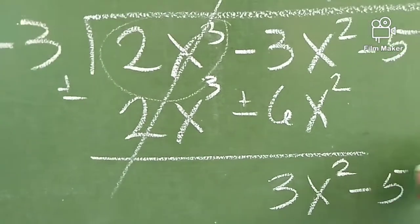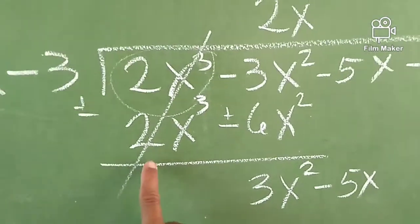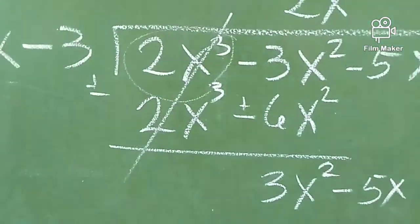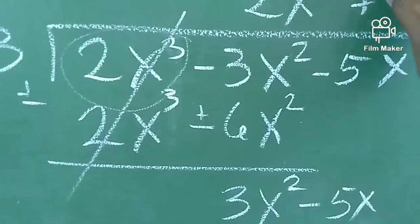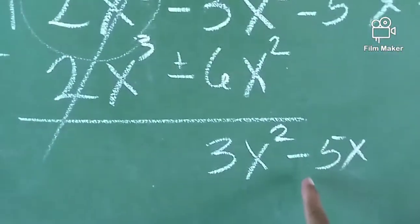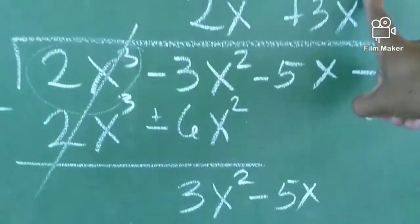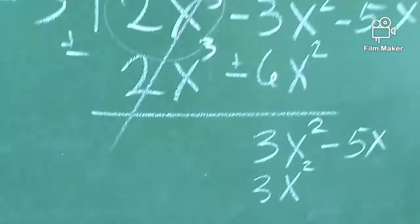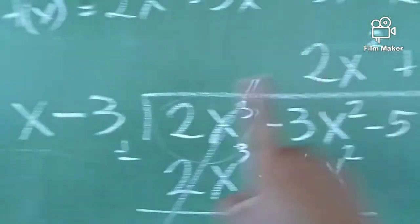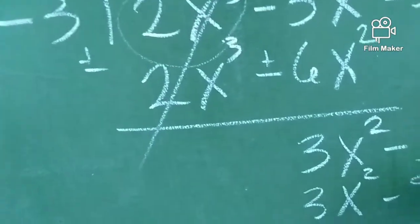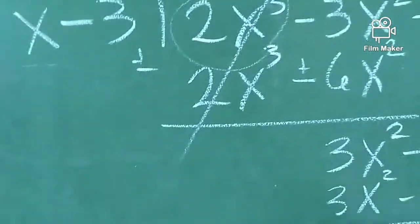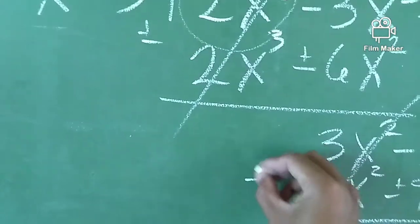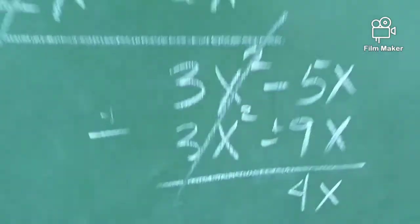Bring down 5x. Tulad nung ginawa natin dito kanina. 3x squared divided by x — bawasan natin ng isang exponent — so we have 3x. So 3x times x, we have 3x squared. 3x times negative 3, so we have negative 9x. Then subtraction po ulit — cancelled out. Change the sign and proceed to addition. So we have positive 4x.